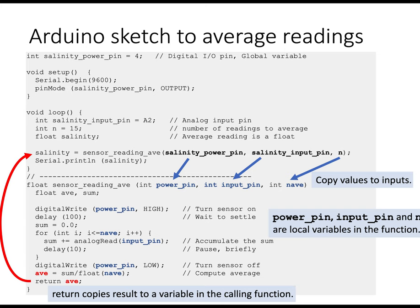Notice that in this version, because we're computing the average, the average will be a floating point value. The salinity variable is declared as a floating point value. And the type of the function sensor reading av is also a float.